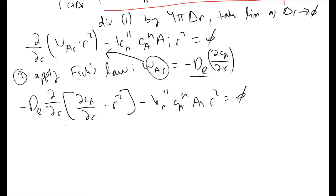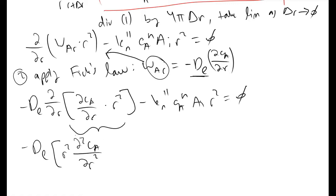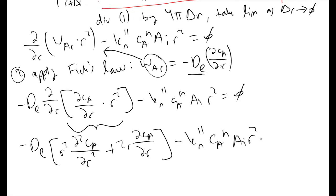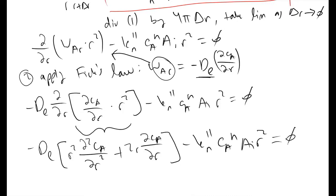We note that because we have two functions of r multiplied together, we need to apply the product rule. This simplifies to −D_e times [r² · d²C_A/dr² + 2r · dC_A/dr] minus K_n'' · C_A^n · A_i · r², and this must equal 0.